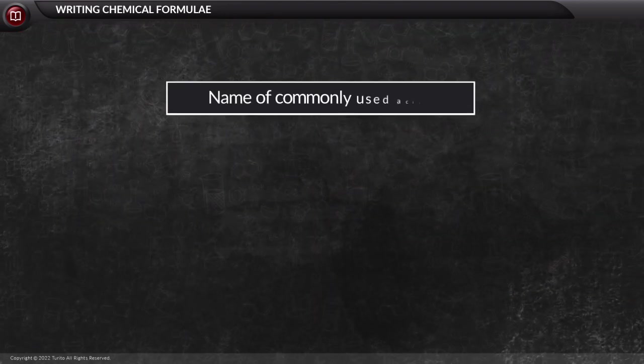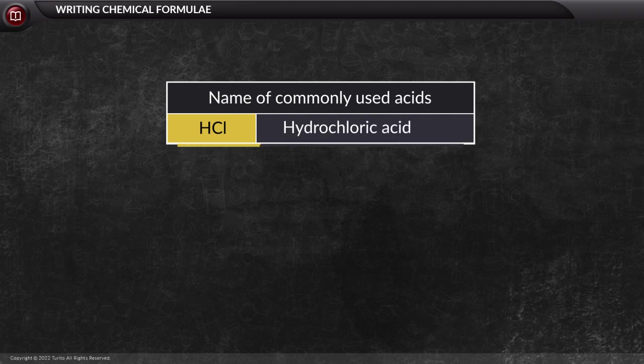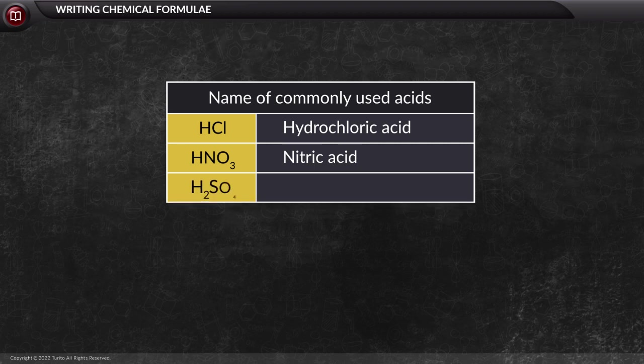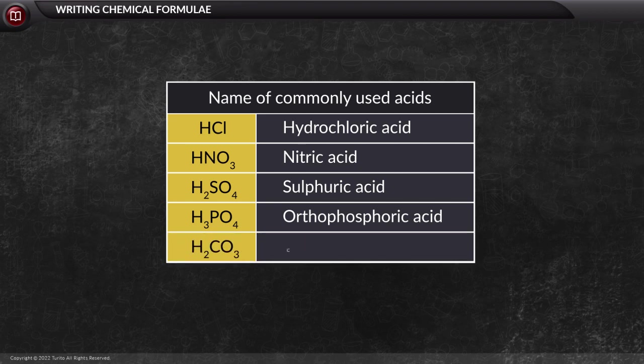Finally, we need to remember the names of commonly used acids. Like, HCl hydrochloric acid, HNO3 nitric acid, H2SO4 sulfuric acid, H3PO4 is orthophosphoric acid, and H2CO3 is carbonic acid.